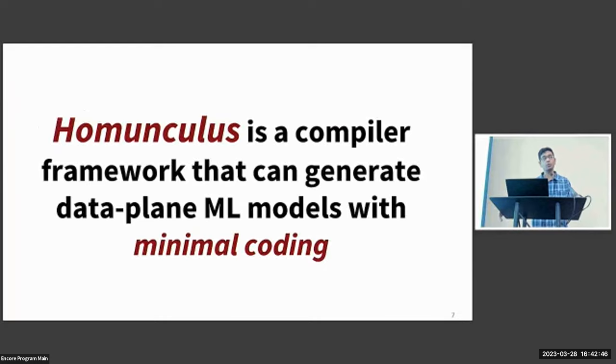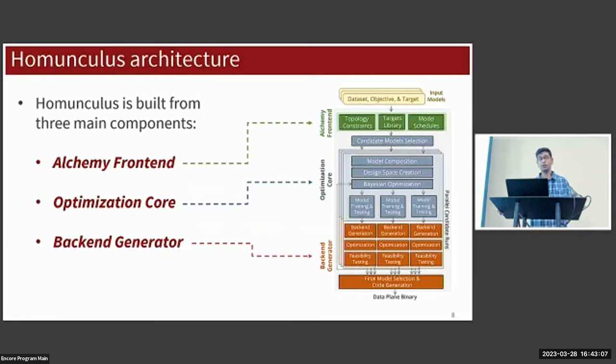Homunculus is a compiler framework that can generate data plane ML models with minimal coding effort. Users now need only provide a short snippet of code describing what they want and Homunculus will return an ML model to run in the data plane. This abstracts away things like hyperparameter tuning, balancing of resources and network constraints.